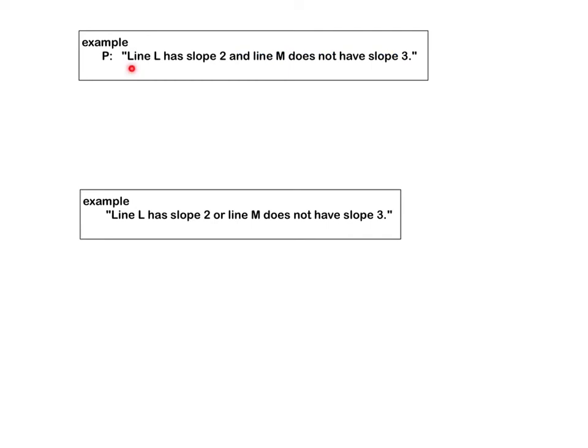So the first example says line L has slope 2 and line M does not have slope 3. The negation says it is not the case that line L has slope 2 and line M does not have slope 3. So written in this way, it's hard to understand and maybe even ambiguous. I can imagine people understanding this in two different ways, depending on how you group the terms.